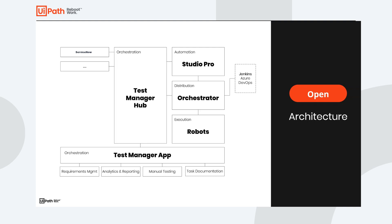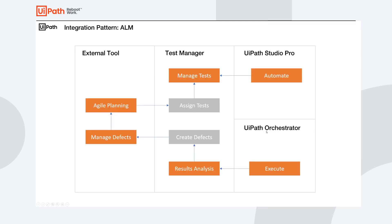Let's take a look from a more task-based perspective and see what we do in which tool. We have ServiceNow as the external tool, used for high-level planning and managing defects. The Test Manager App with the Test Manager Hub will be used for managing and automating tests, and we'll use Orchestrator for execution, result analysis, and optionally creating defects — which will be created back in ServiceNow.